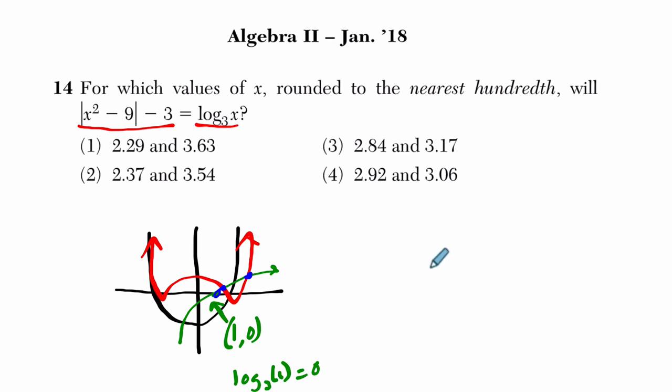Now, the change of base formula says that if you have the log of some base A of B, it's equal to the log of B over the log of A. That's a little subtle, what's happening right there, and you can put any base here, C. But usually we leave that base out because it maybe confuses things.